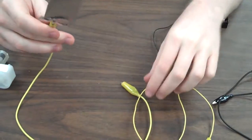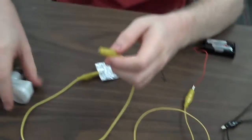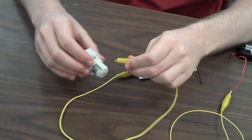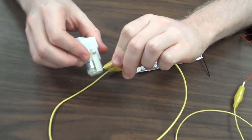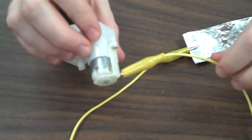Connect the other alligator clip to the other end. Connect this to your motor or whatever you're trying to power, like so.